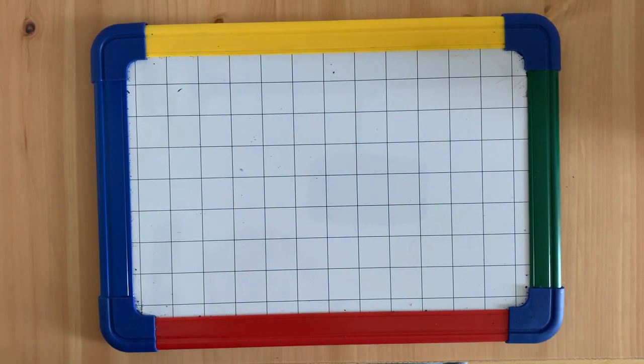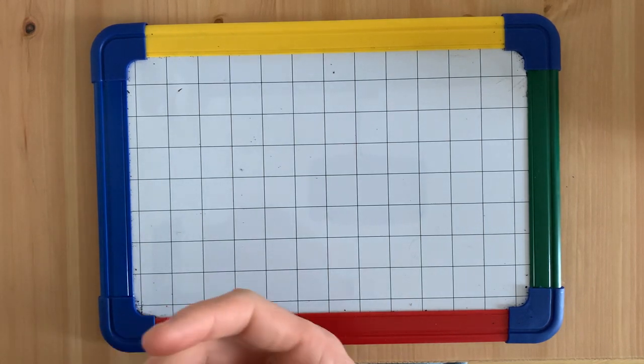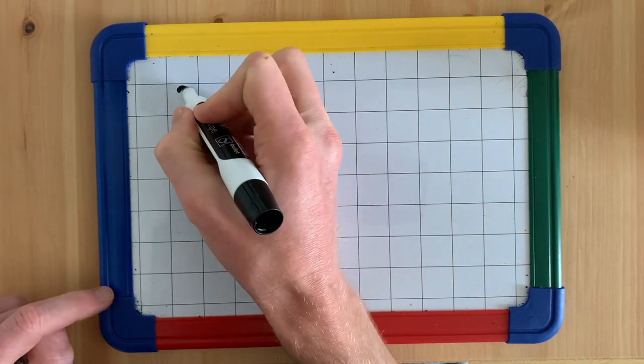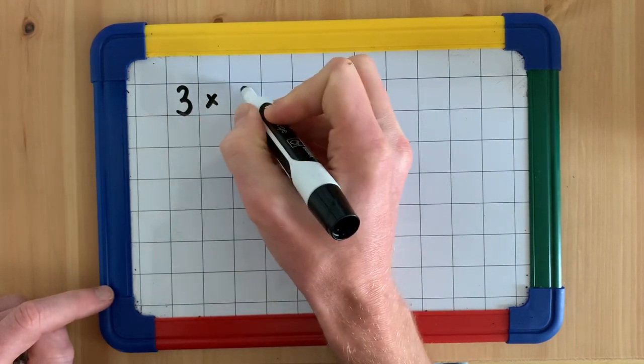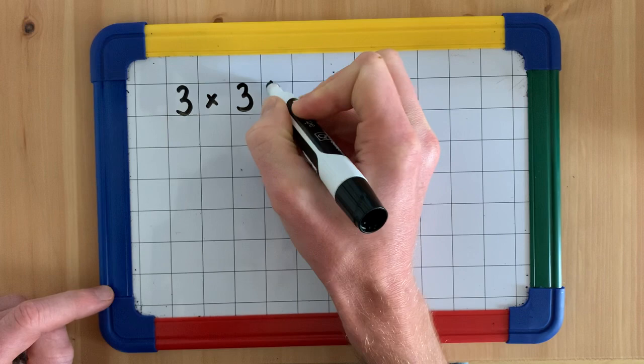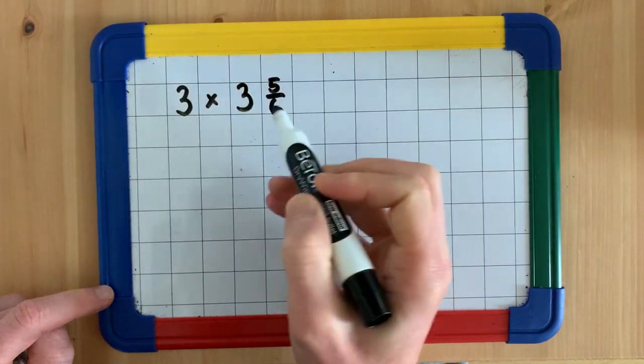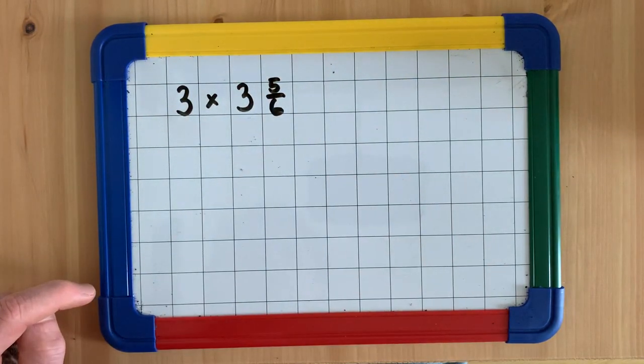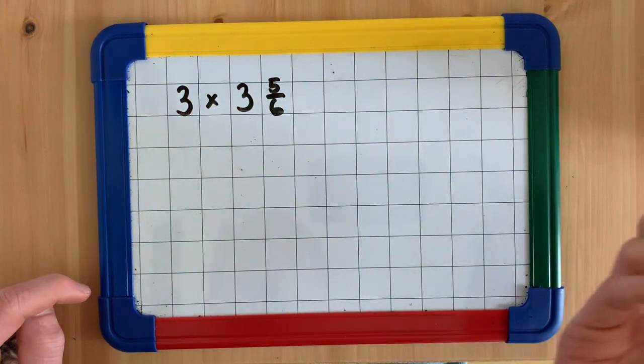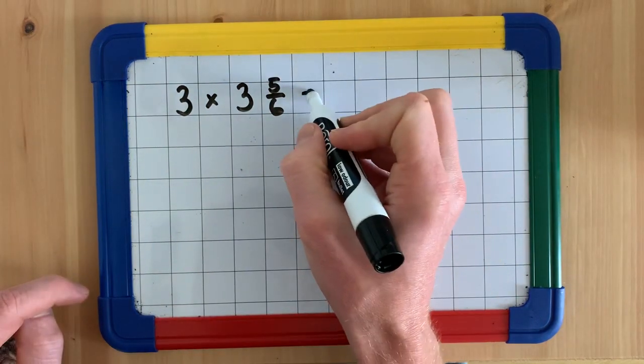In this video, we're going to look at multiplying a mixed number by an integer, a whole number. We're going to look at solving the equation 3 multiplied by 3 and 5/6. So here's our mixed number, integer and a fraction. We can solve this using two different methods.